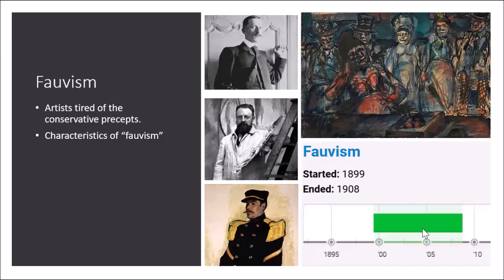There were artists who were upset with the conservative precepts — people like André Derain, Henri Matisse, Georges Rouault, and Albert Marquet. This piece right here, as I'm pointing to, is Georges Rouault, and this right here is a painting done by Albert Marquet. They wanted to create an alternate exhibition, and they did, and they referred to this as the Autumn Salon.